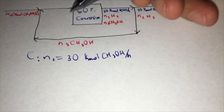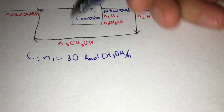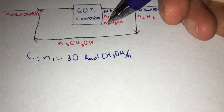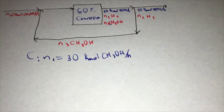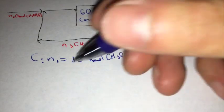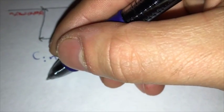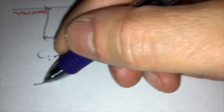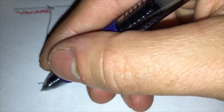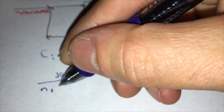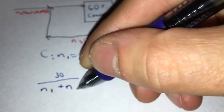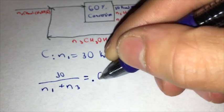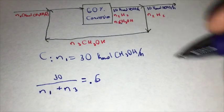And we can use this single pass conversion in order to solve for our N3. So we are going to do our 30 kmol going in over our N1 plus our N3, and that is equal to 0.6, 60% conversion.